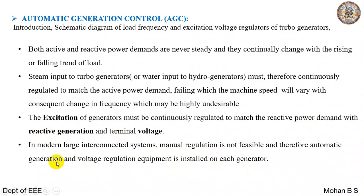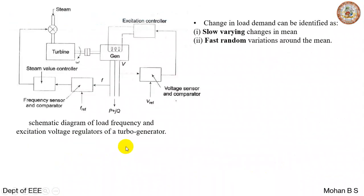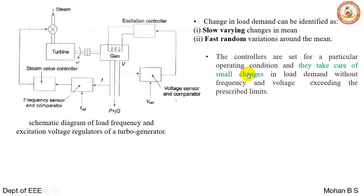Automatic generation control is with respect to real power and frequency. Voltage regulations are with respect to voltage and reactive power. Load changes can be identified as small varying changes and fast random changes. Controllers are set for a particular operating condition and take care of small changes in load demand without frequency and voltage exceeding the prescribed limits.